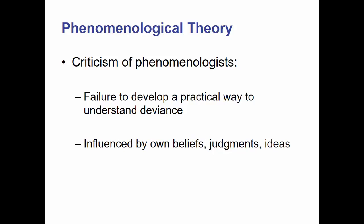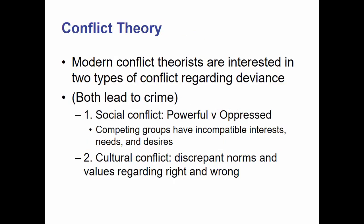Phenomenologists are not without their critics. Phenomenologists have been unable to develop a practical way to understand deviance. They are largely influenced by their own beliefs, ideas, and judgments, and in this way a lot of phenomenological theories are hard to apply to the study of sociological deviance itself. Which is why conflict theory comes in.